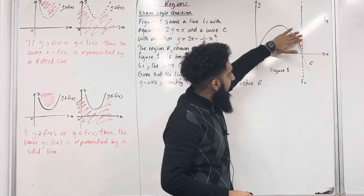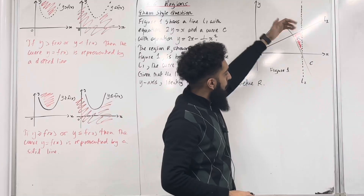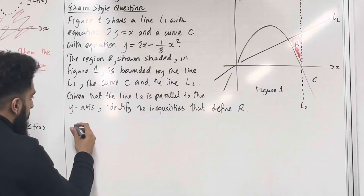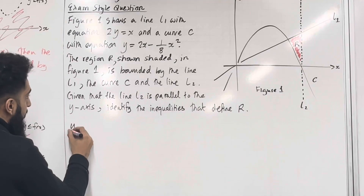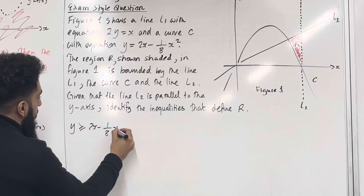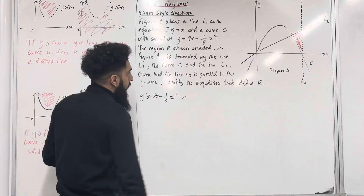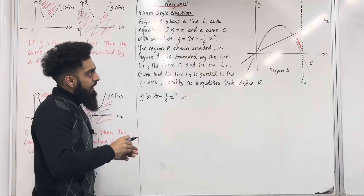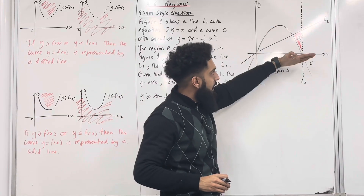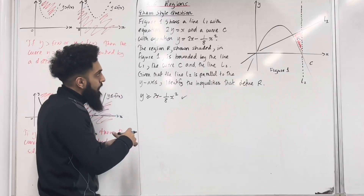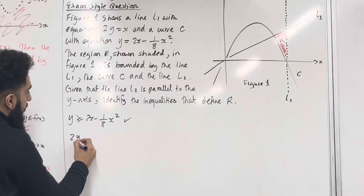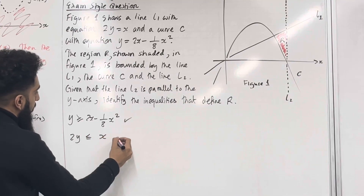Let's first look at the quadratic. If we're shading in this part, we're shading above the quadratic. So the inequality for the quadratic will be y is greater than or equal to 2x minus 1 over 8x squared. Let's have a look at the line L1. If we're shading this part over here, we're shading below the line. So the inequality for the line L1 will therefore be 2y is less than or equal to x.